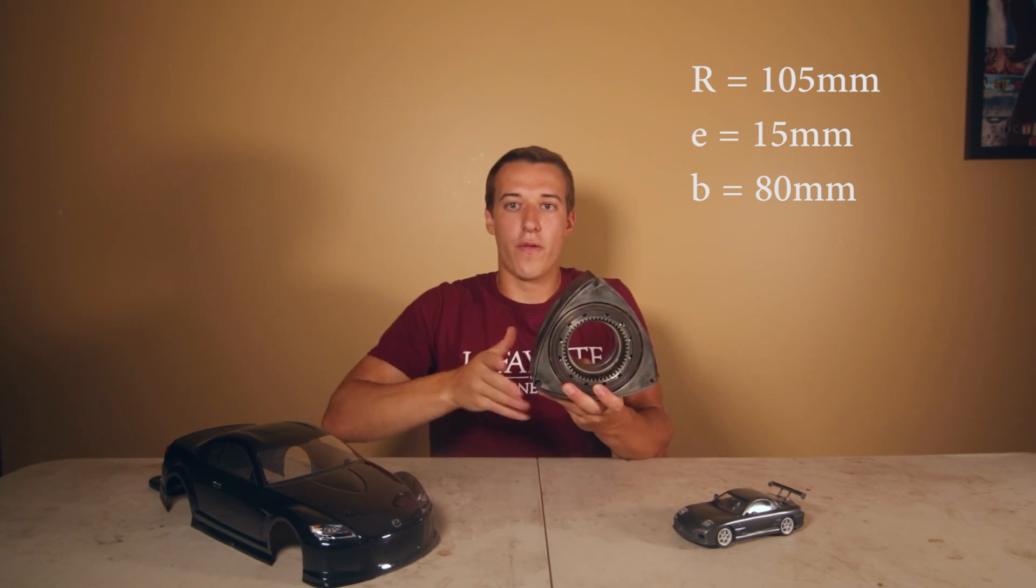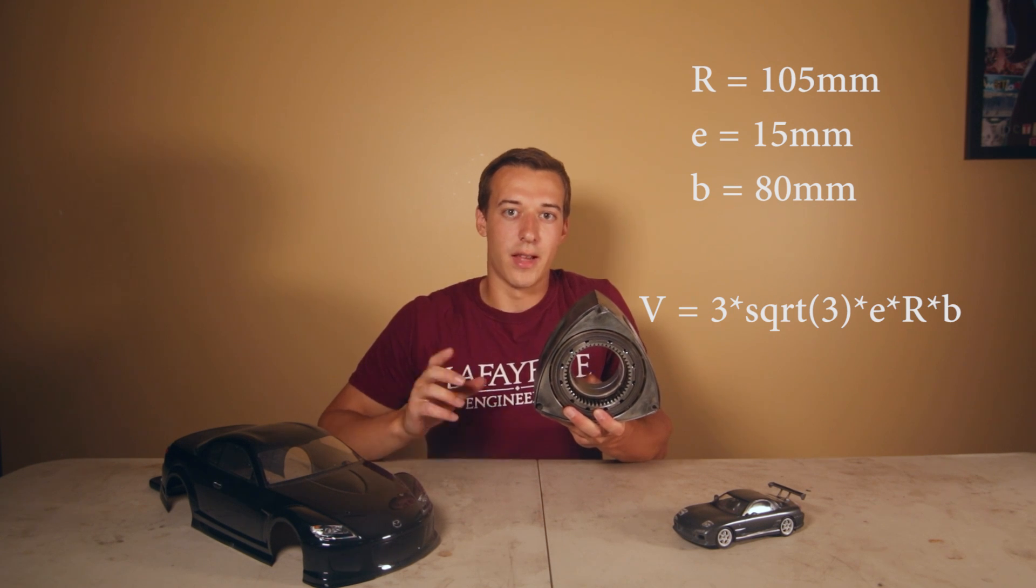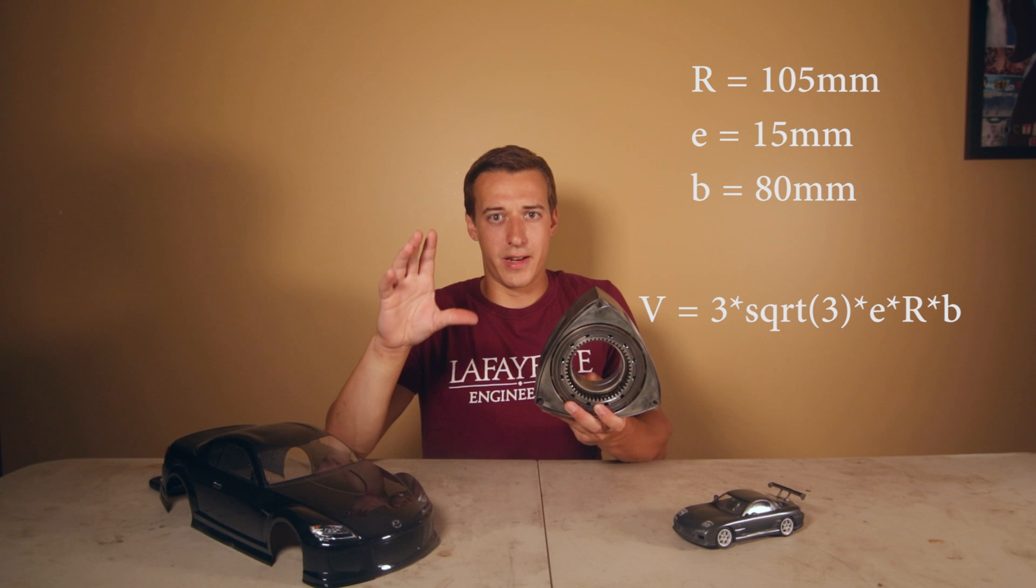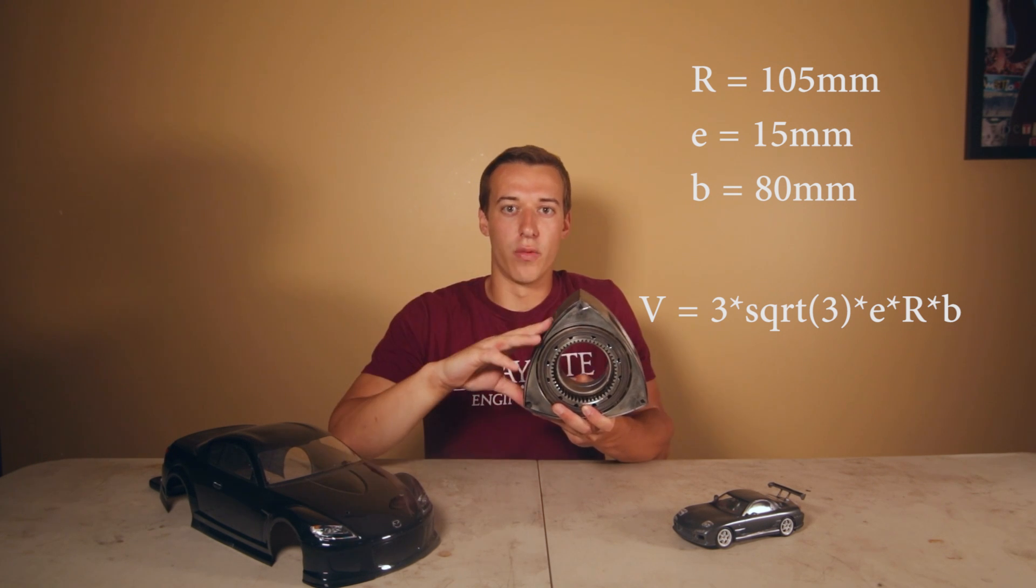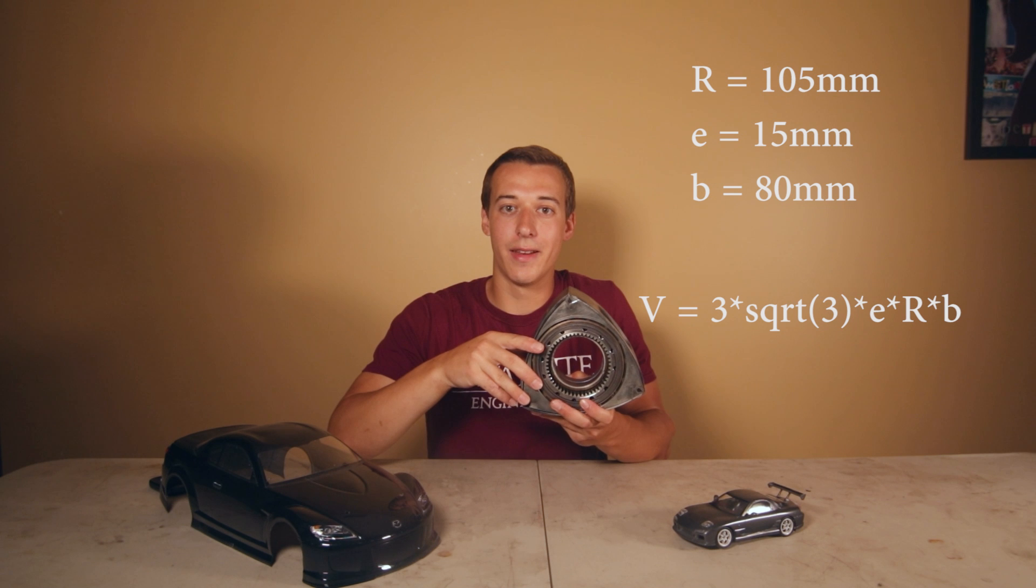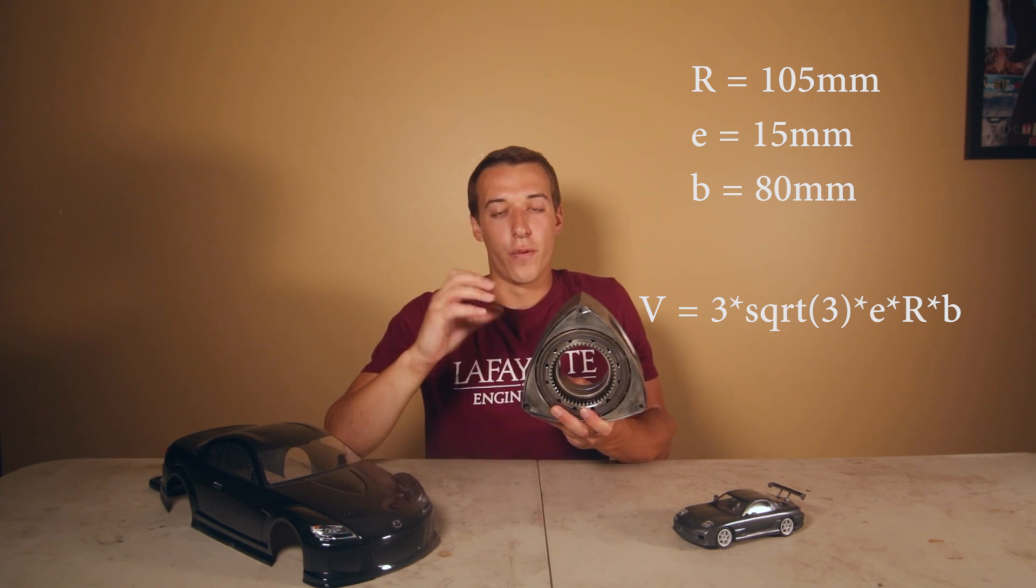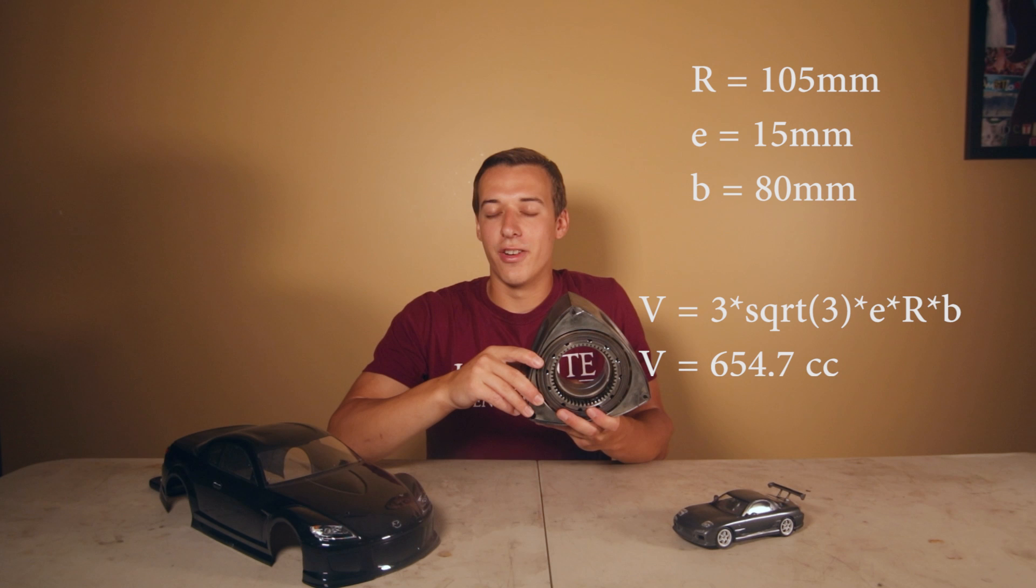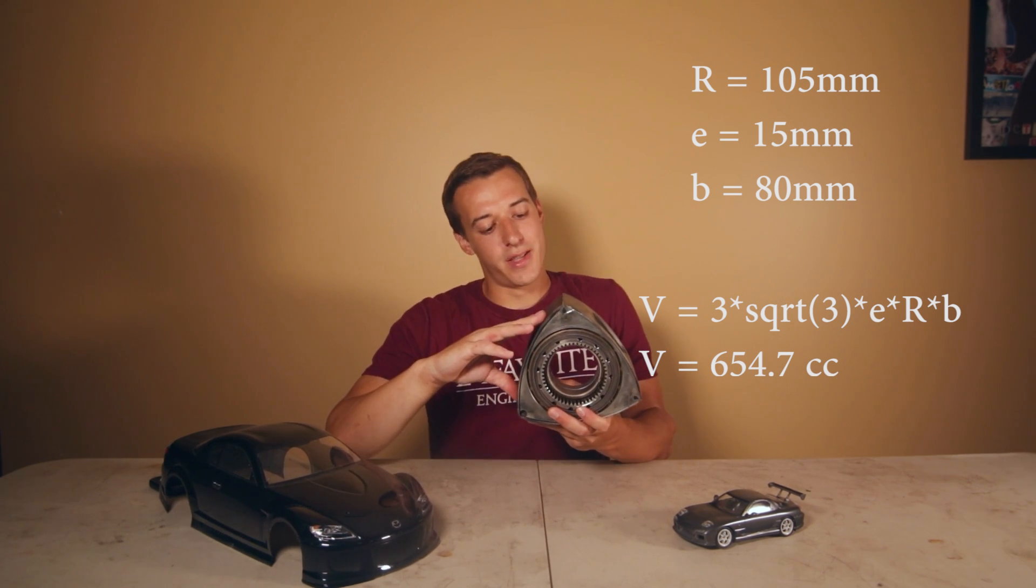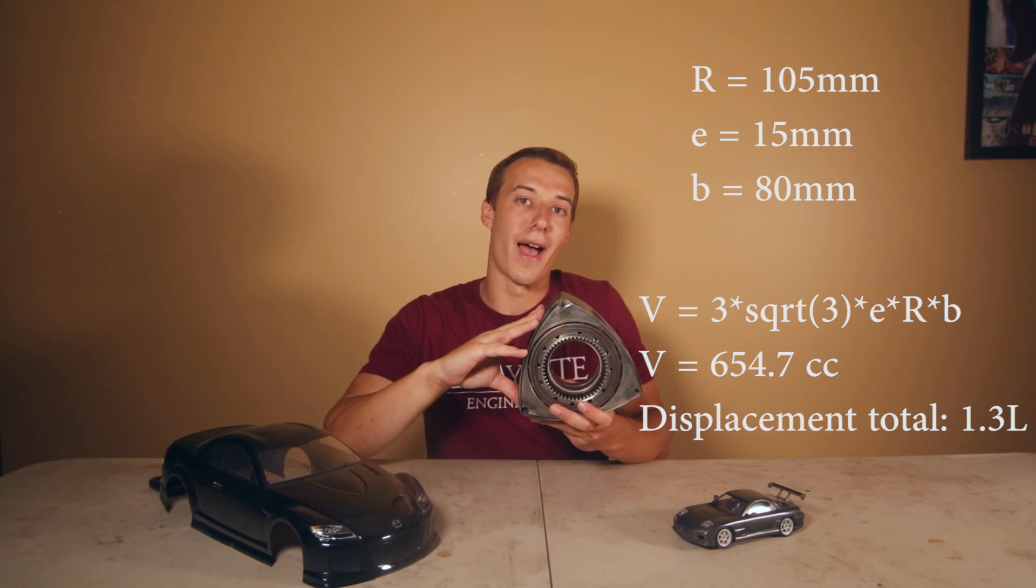So the formula for the stroke volume for a rotary engine is given as 3 root 3 times E R B. So this is the formula given in the 1981 book Rotary Engine. So if we plug in all these numbers we get 654.7 cc's as a stroke volume for one rotor. Because there are two rotors we have to multiply that number by two to get 1309 cc.